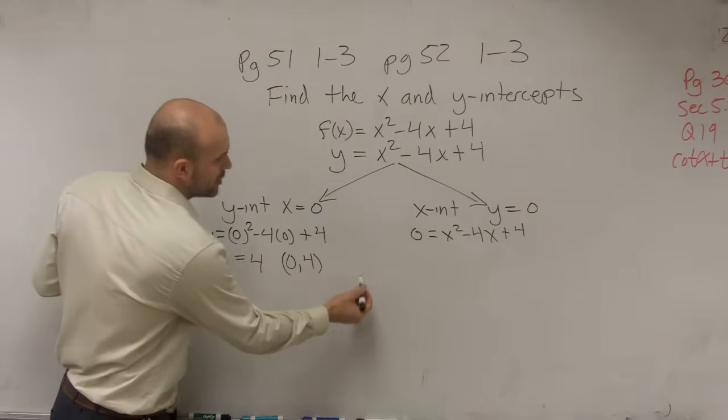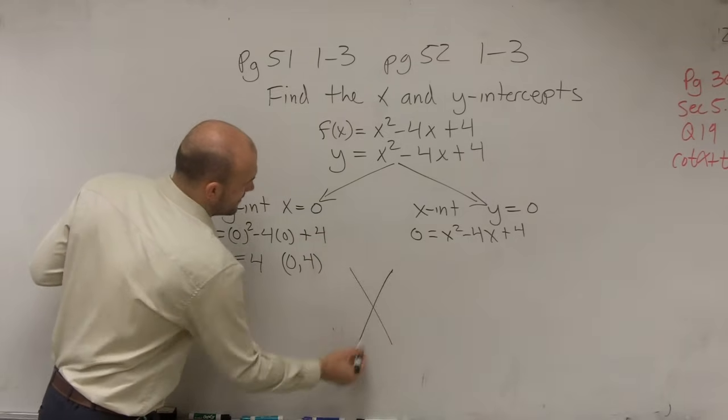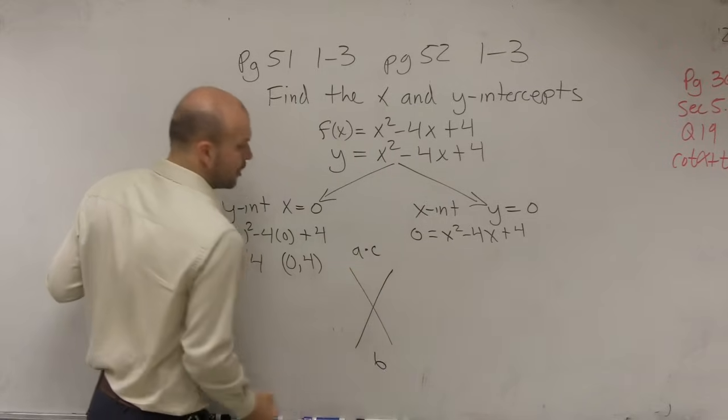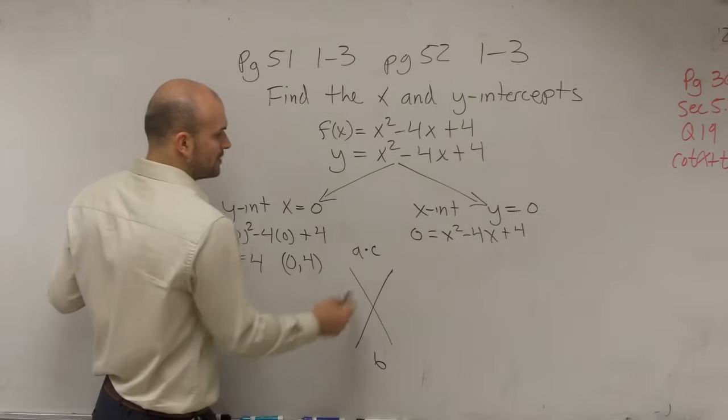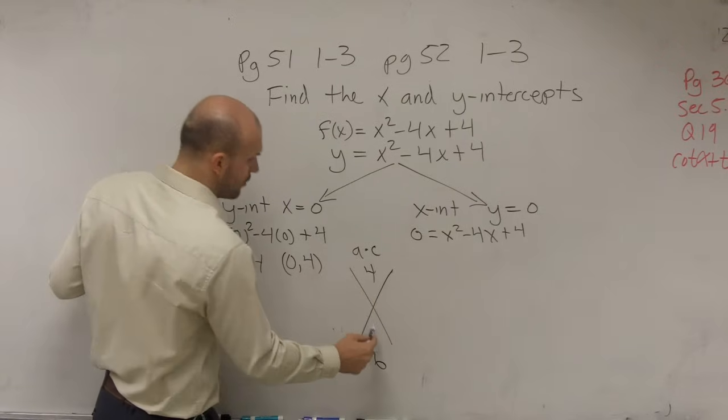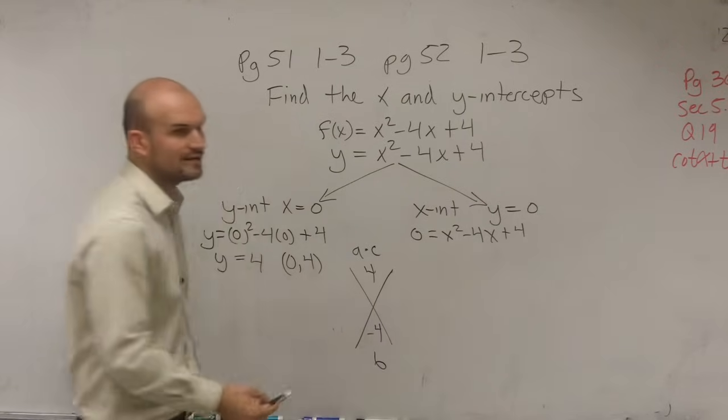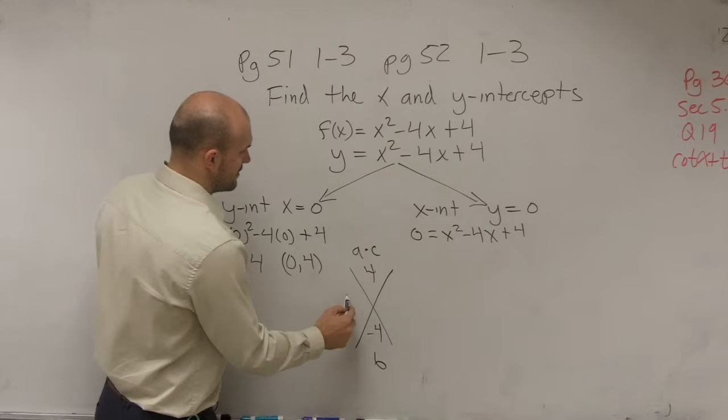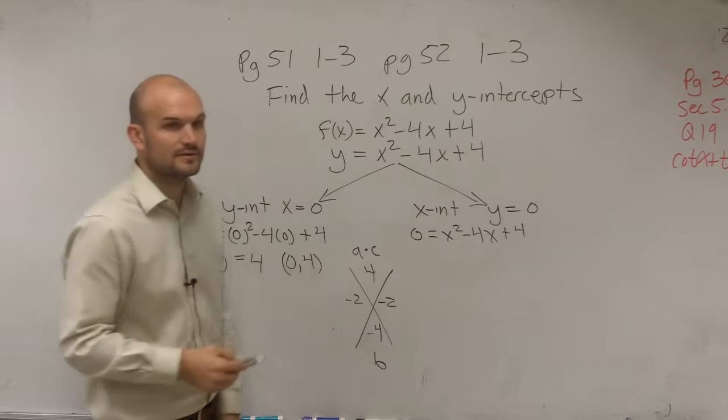So that is where we're going to go back into this case again, right? Where you do your a times c over b. So therefore, you look at what two terms multiply to give you 4, but add to give you negative 4. And you're going to have negative 2 and negative 2.